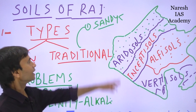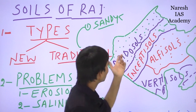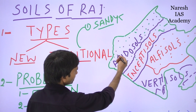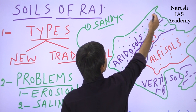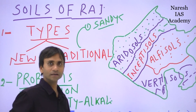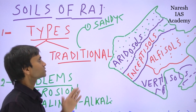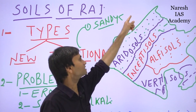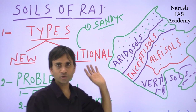The saline sandy soils mainly cover the geographical boundary of the Barmer district, Jaisalmer, Jodhpur, Bikaner, and some parts of Ganganagar and western Hanumangarh. Sandy saline soil covers the saline sandy soil and the sierozem soils.